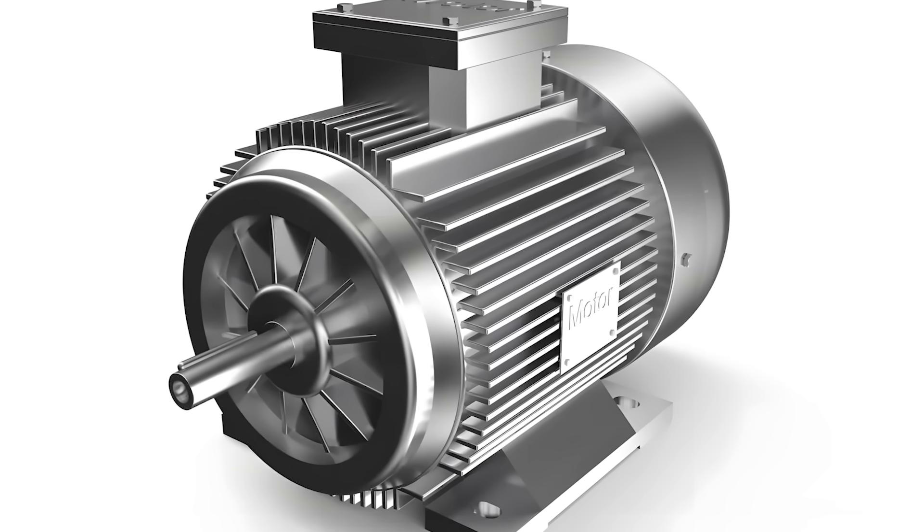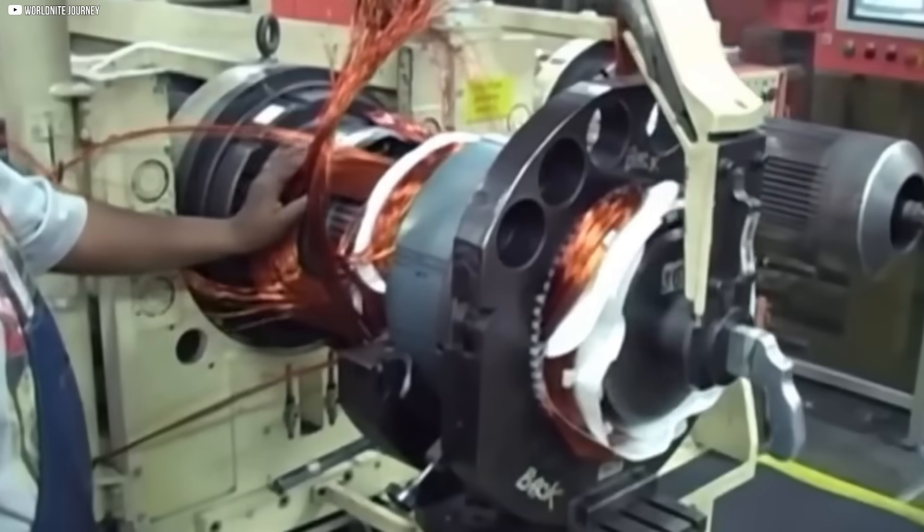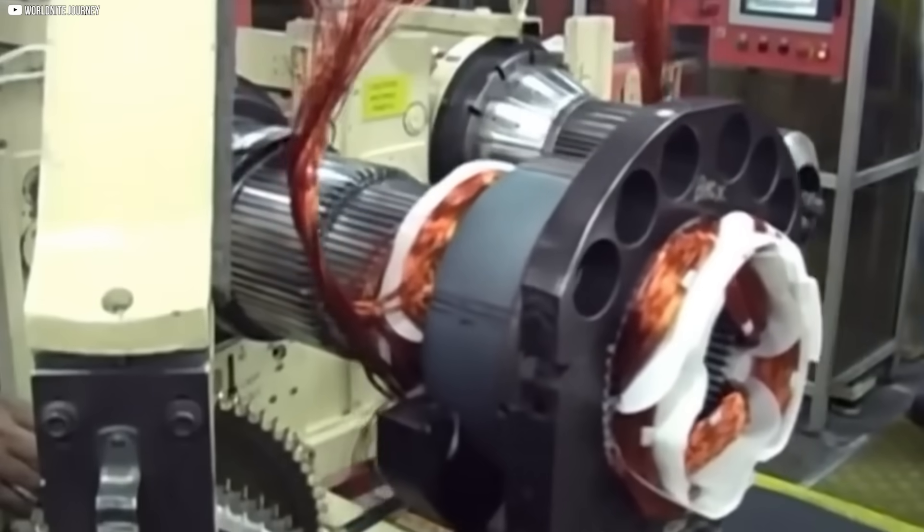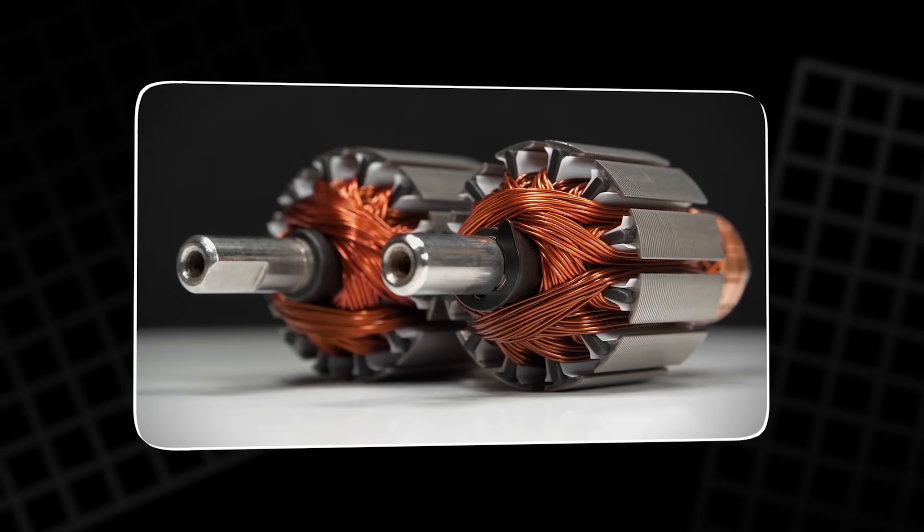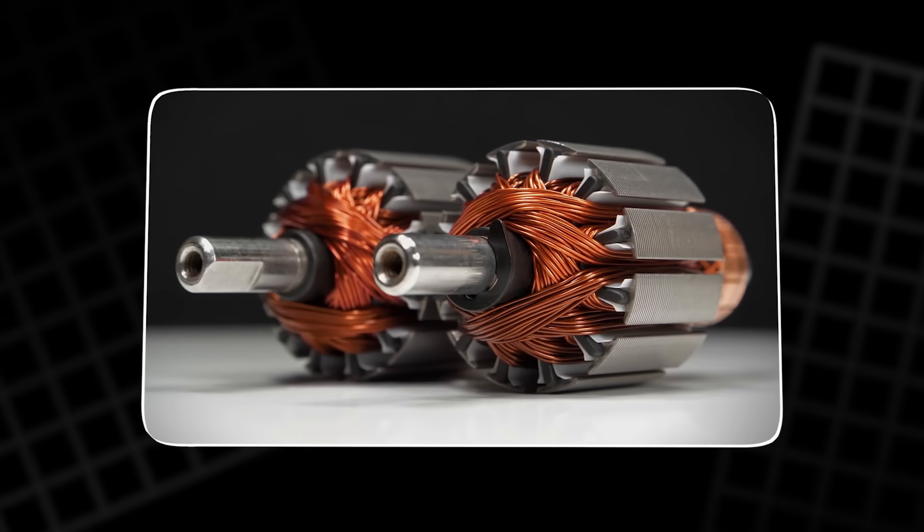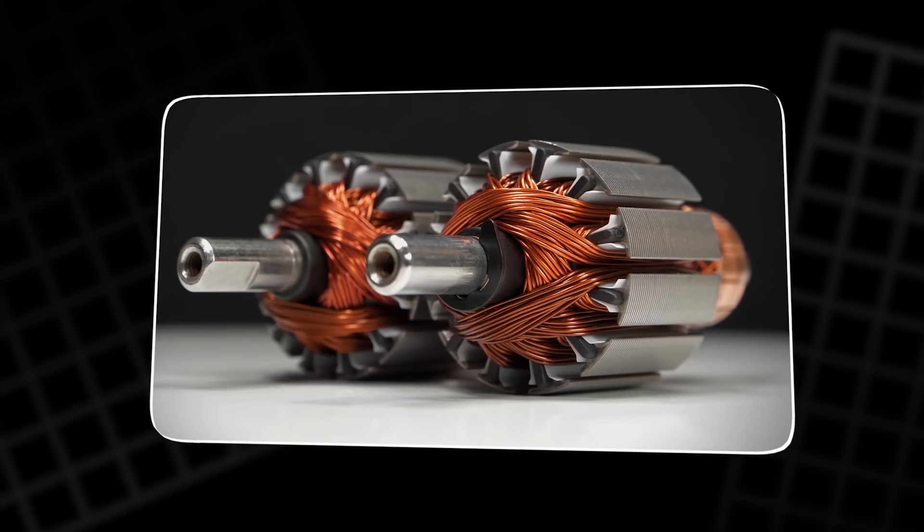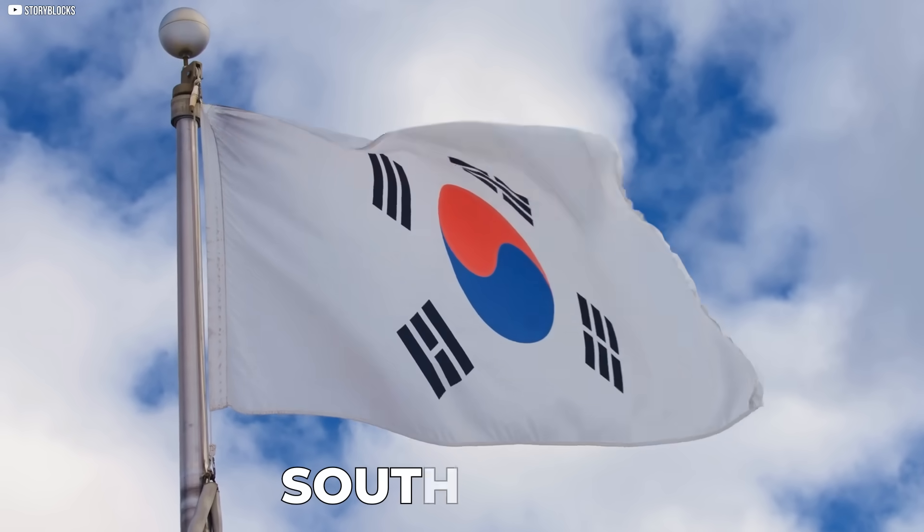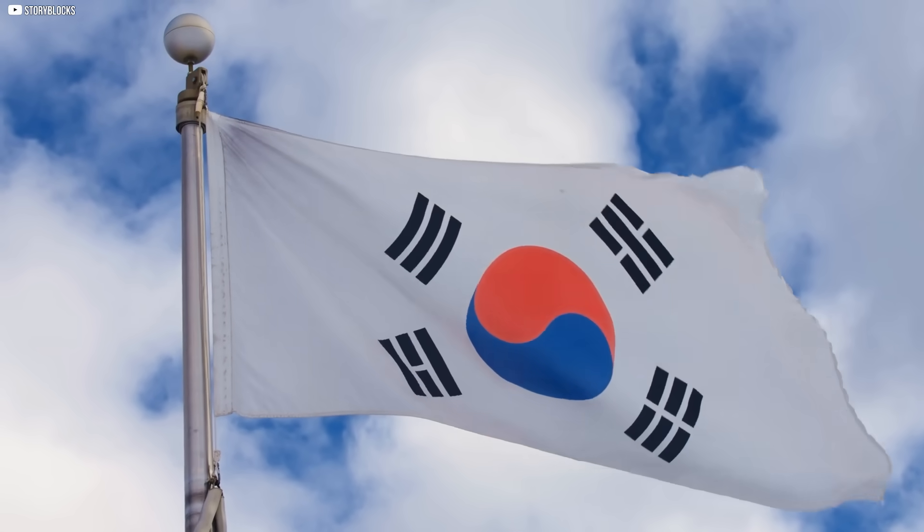We needed motors that were lighter, more efficient, able to flex into new shapes and fit into places rigid copper simply couldn't go. Yet no matter how much engineers tweaked designs, one part stayed the same. The coils had to be metal. That was the limit until now. Because somewhere in South Korea, that limit just broke.